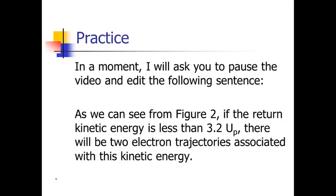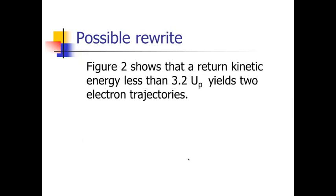So let me show you my edit for this sentence — again, you might not get exactly the same thing, but hopefully you're cutting a lot of the same words. 'As we can see from figure two' — let's just say 'figure two shows.' That 'as we can see from' is just a lot of extra words; we can say it directly. Figure two shows that a return kinetic energy less than 3.2 UP — that's now the subject of the clause — yields two electron trajectories. We don't need to repeat 'kinetic energy.' So: figure two shows that a return kinetic energy less than 3.2 UP yields two electron trajectories.